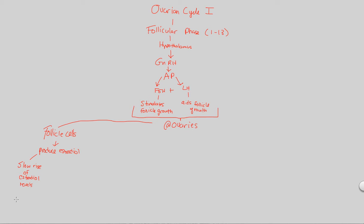Why is that? Why don't we just have a huge surge of estradiol? That's because interestingly enough, low levels of estradiol, relatively low, slow rising levels actually inhibit further FSH and LH secretion from the anterior pituitary.